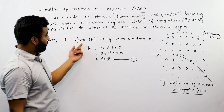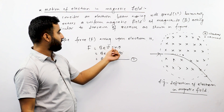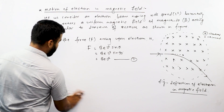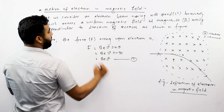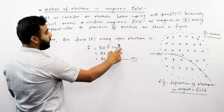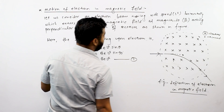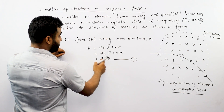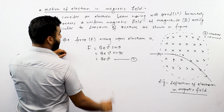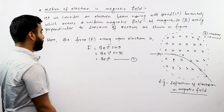The force acting upon the electron is F = Bev sin θ. This is the formula for the magnetic force. When the magnetic field is perpendicular to the velocity, sin 90° equals 1, so the force simplifies to F = Bev.